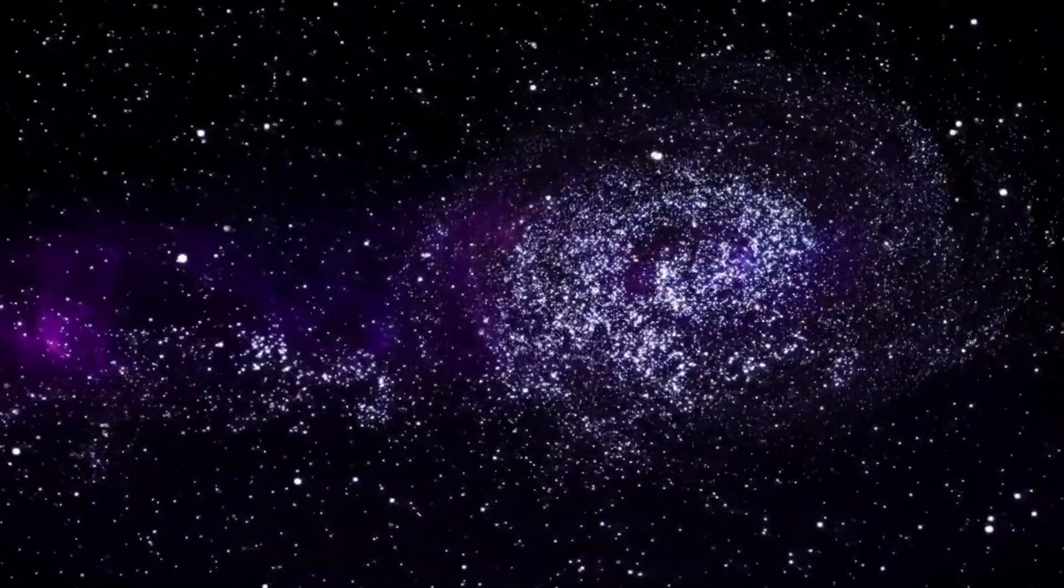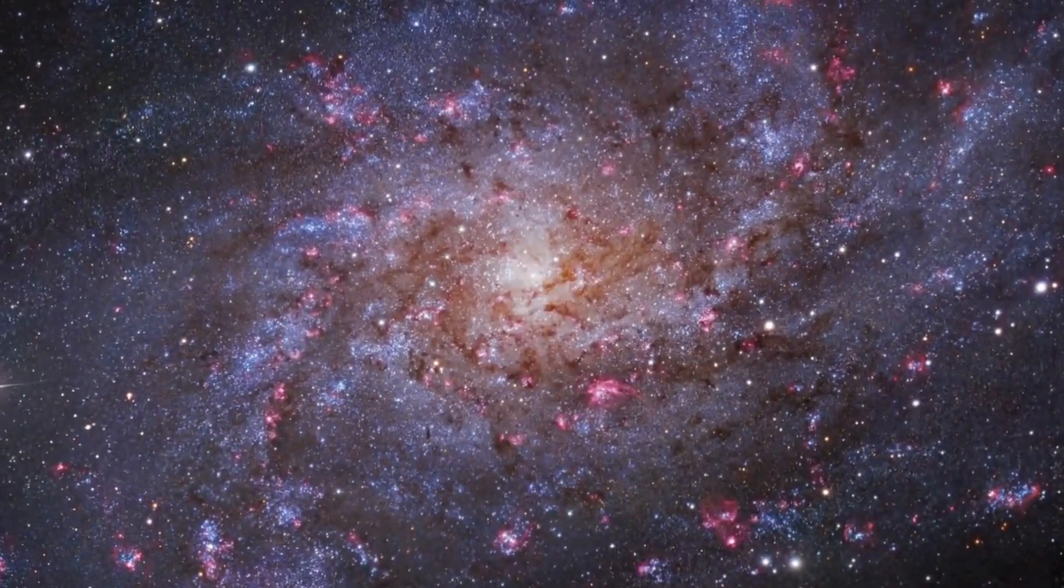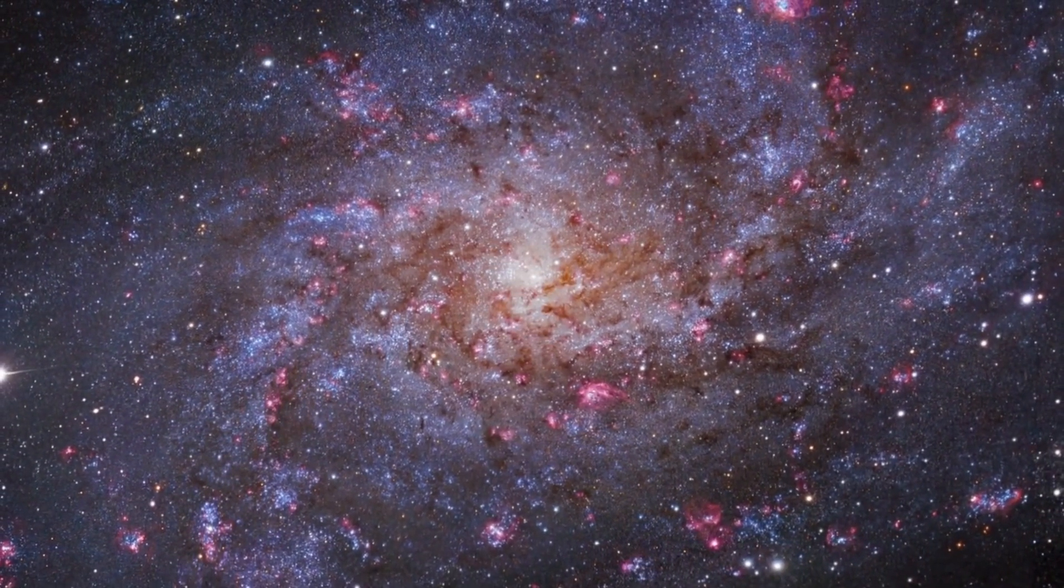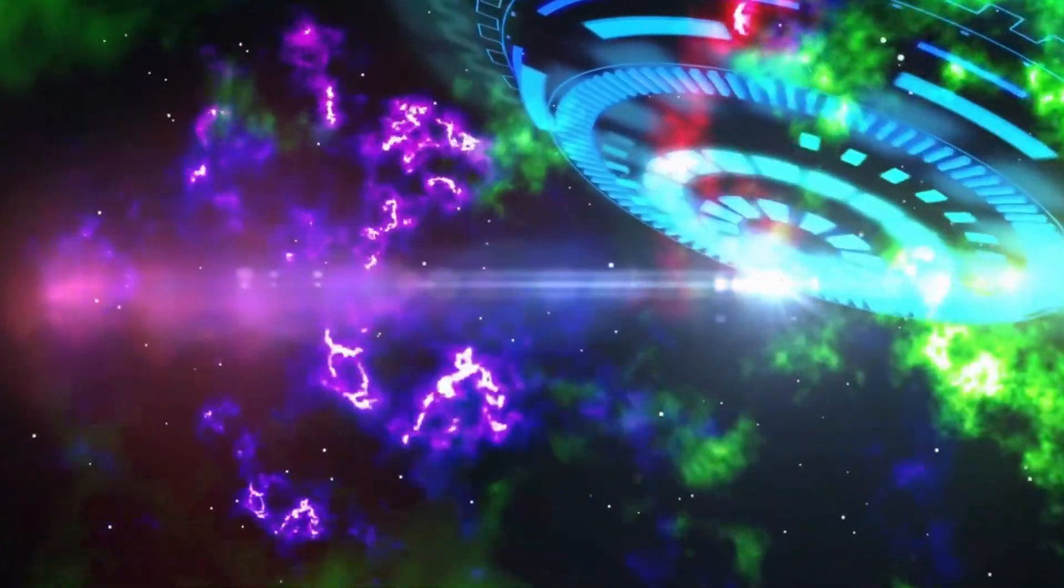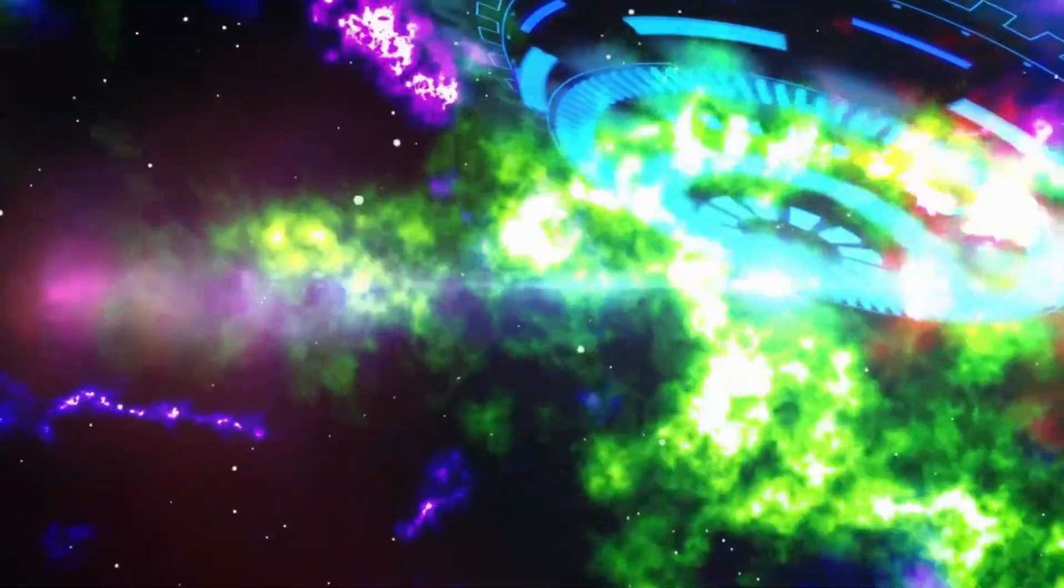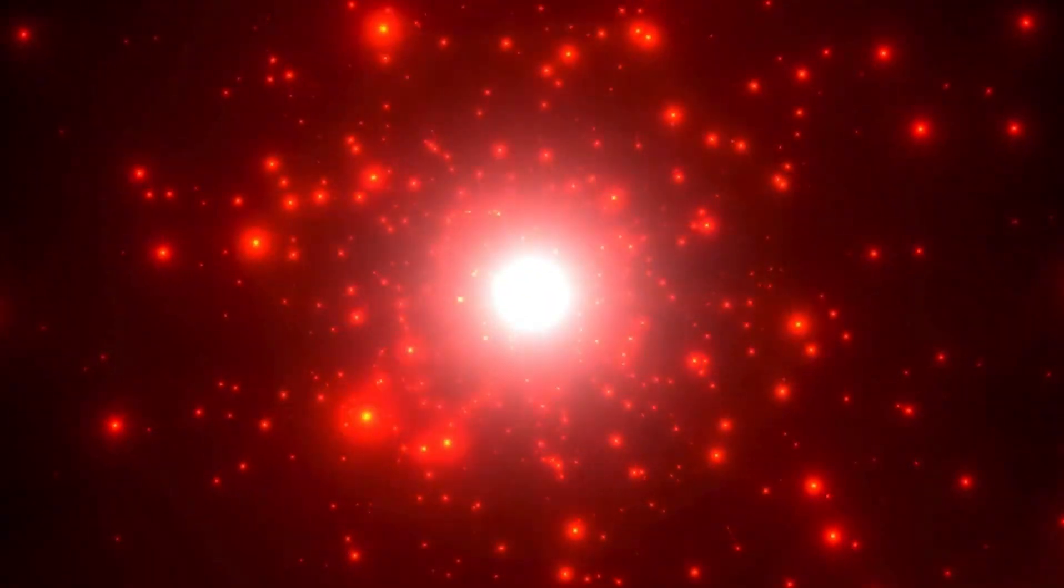The six giant galaxies, which hold almost as many stars as the Milky Way despite forming just 500 to 700 million years after the Big Bang, have been labeled universe breakers by the team of astronomers that discovered them. This is because if they are indeed real, this finding challenges our whole understanding of galaxy formation.